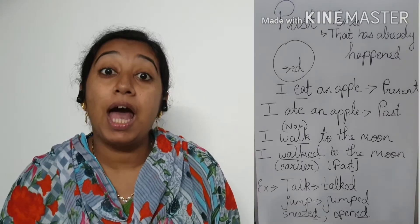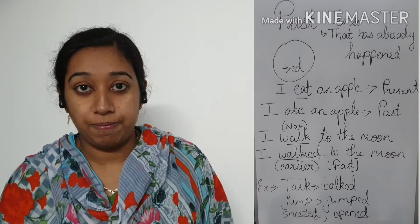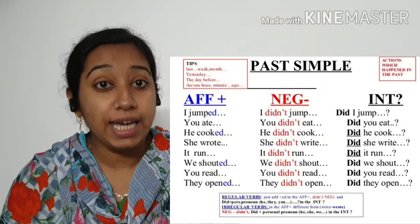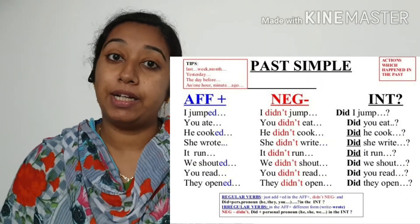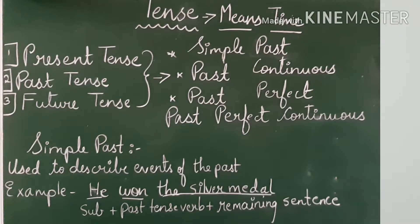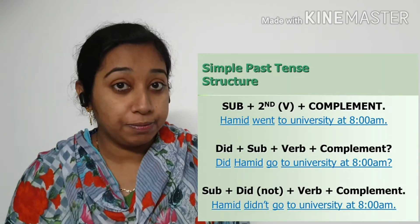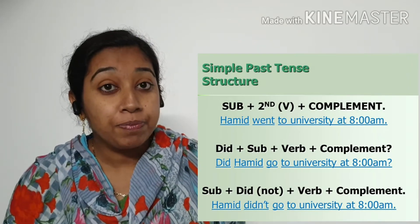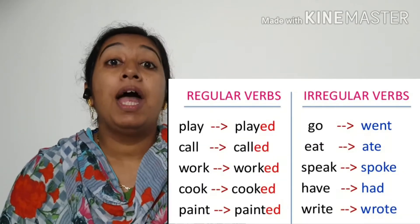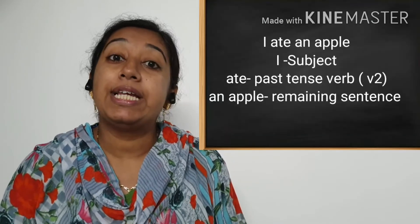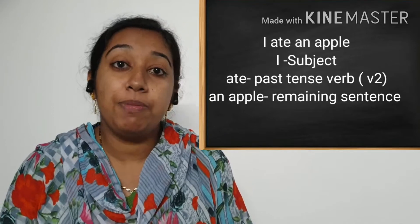The two divisions are simple past tense and past perfect tense. What is a simple past tense? Simple past tense indicates an action or an event completed in the past time. The structure of the simple past: subject plus verb 2. Example — I ate an apple. 'I' is the subject, 'ate' is the verb, and then the remaining part of the sentence.